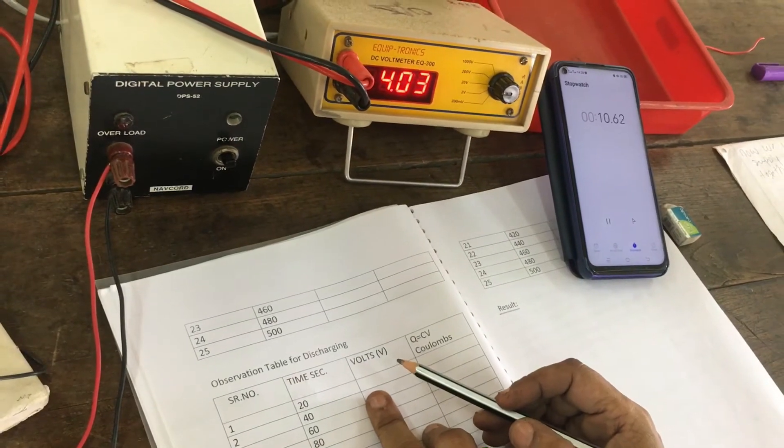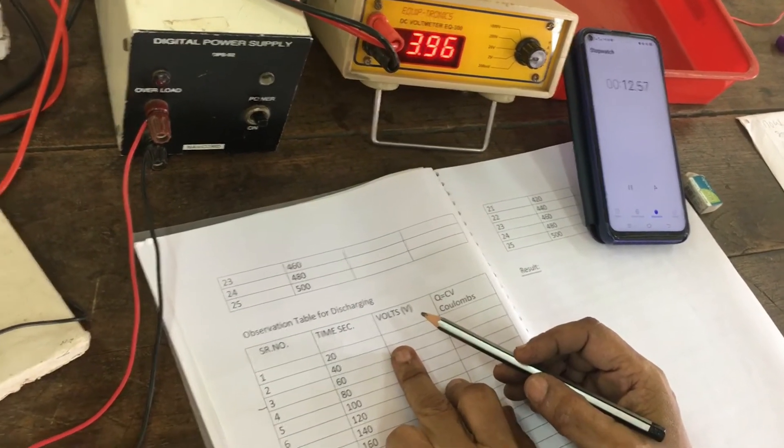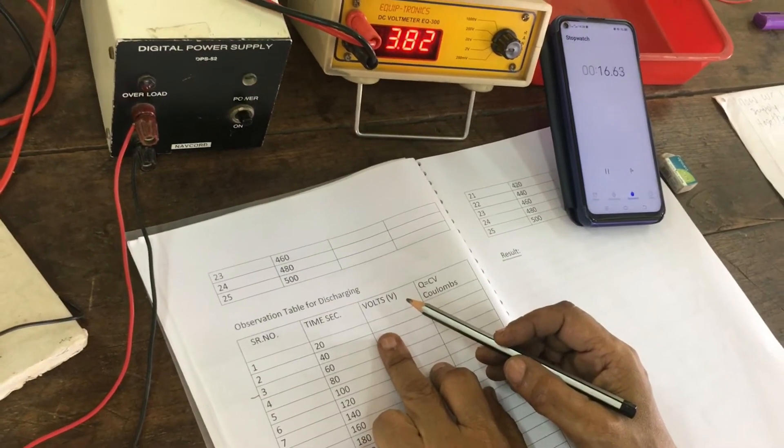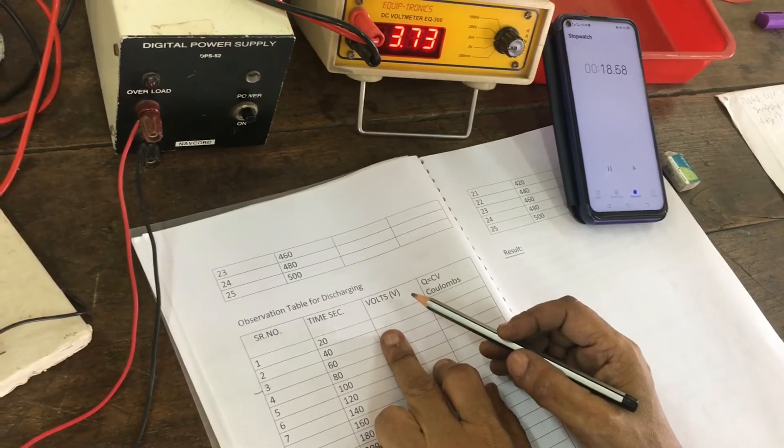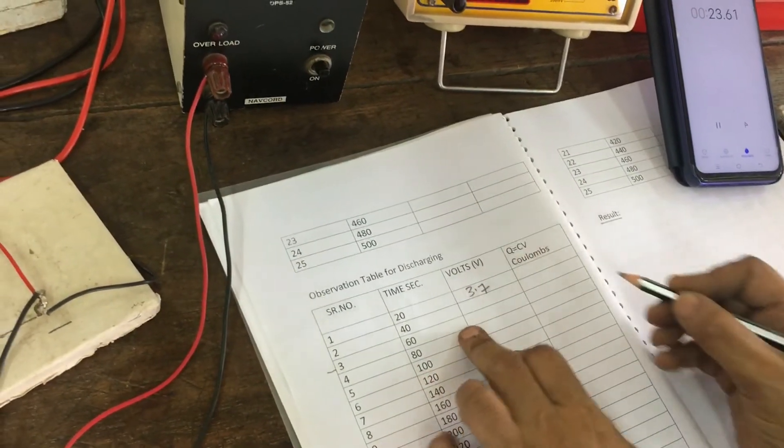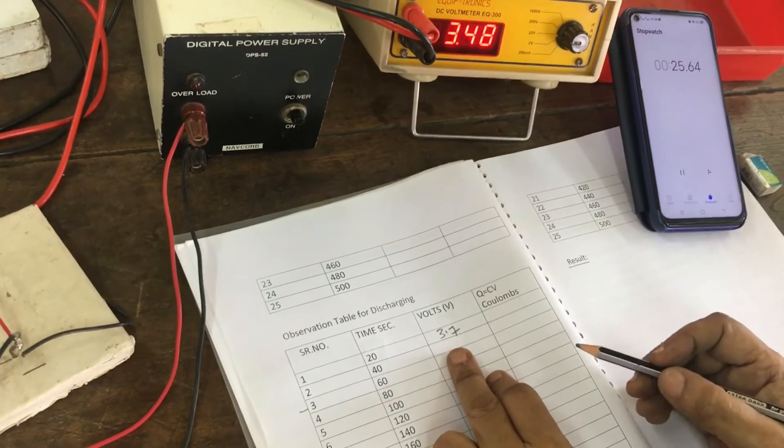At 20 seconds: 3.7 volt. The capacitor voltage is 3.7 across the capacitor.